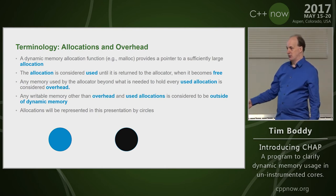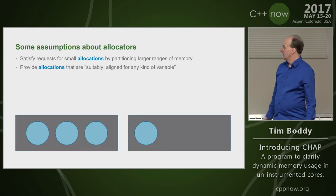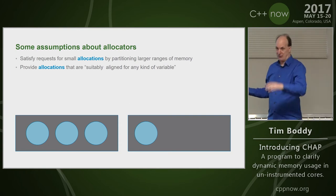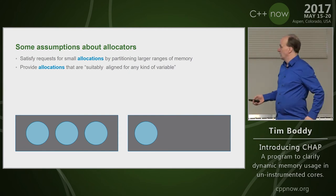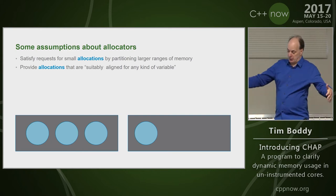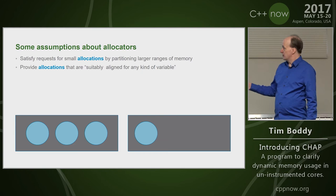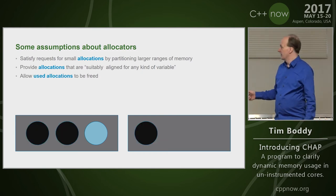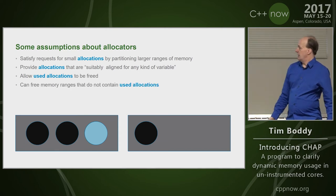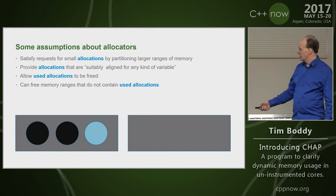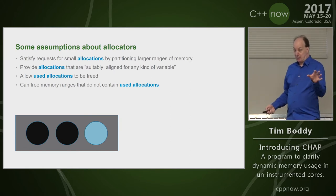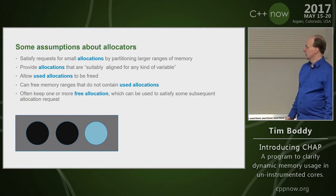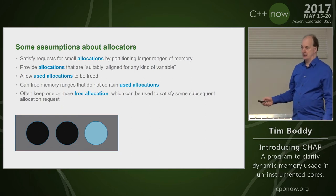Allocations are represented as circles in my diagrams. Some assumptions about allocators like malloc and free: they break up larger ranges of memory — maybe via mmap'd pages. They provide suitably aligned allocations. They allow used allocations to be freed. They can free whole memory ranges that don't contain used allocations and give them back to the OS, though it's not always easy to predict when. CHAP can give you some help understanding that. They often keep some free allocations around, which is part of what you can't easily predict.